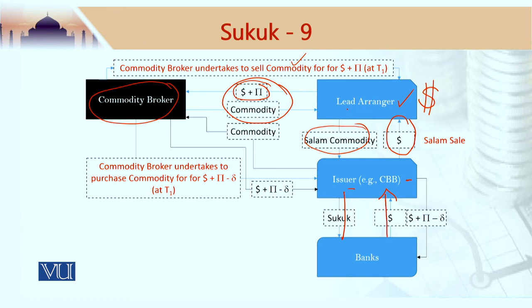The Central Bank of Bahrain does not need that commodity. The commodity would actually be sold to the commodity broker, and just like the WAD-based arrangement between the lead arranger and the commodity broker, there would be a WAD-based arrangement between the commodity broker and the issuer right from the beginning. The commodity would be sold and the proceeds of that commodity sale would be given back to the banks as their initial investment. This is how a Sukuk Salam structure works.